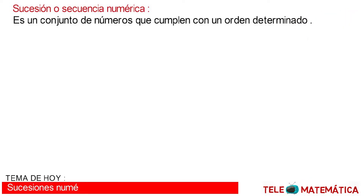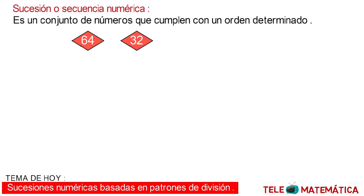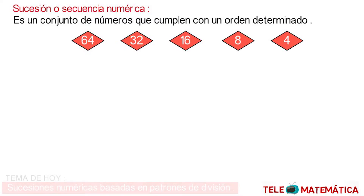For example, we have the number 64, the number 32, the number 16, the number 8, and the number 4 respectively. This list of elements is called a succession or sequence.